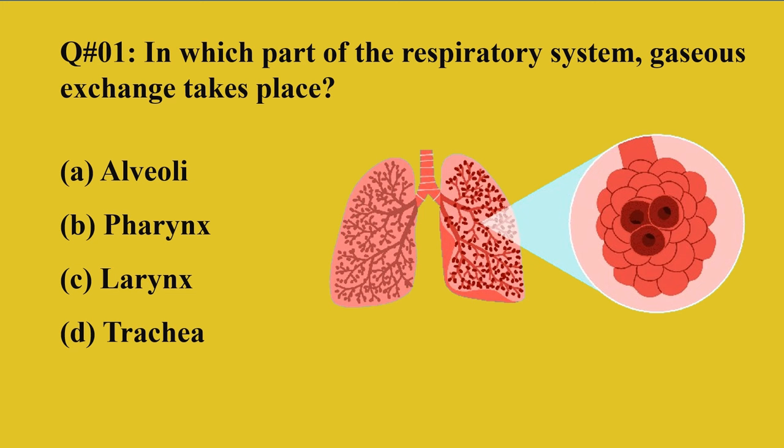As these are the organs of the respiratory system, the gaseous exchange takes place in the alveoli. Alveoli are surrounded by tiny capillaries through which the exchange of gases takes place between the blood and the lungs.